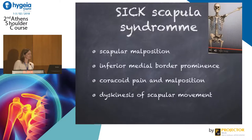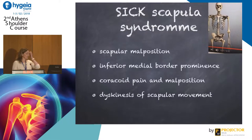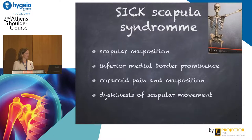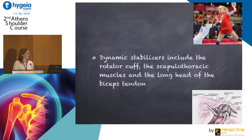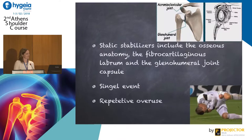We have heard about the sick scapula syndrome from a former lecture — with scapular malposition, the inferior medial border prominence, coracoid pain, and dyskinesis of scapular movements. We have both dynamic and static stabilizers. The dynamic stabilizers include the rotator cuff together with the scapulothoracic muscles and, to some extent, the long head of the biceps tendon. The static stabilizers include the bony parts, the fibrocartilaginous labrum, and the glenohumeral joint capsule.